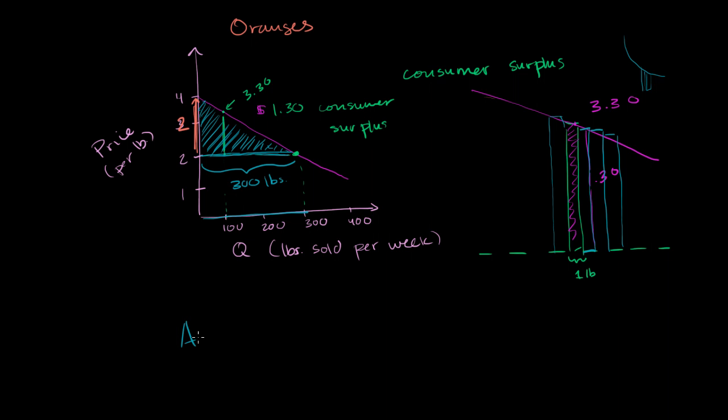So our area, the area between the demand curve and our price equals two is equal to one-half times base times height. One-half times the base, which is 300 pounds, times 300 pounds, times the height, which is $2. Which is $2 per pound.